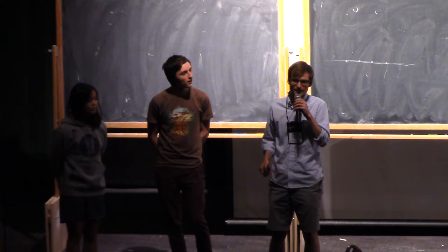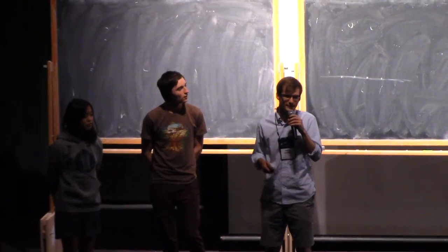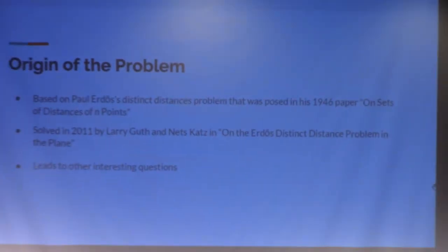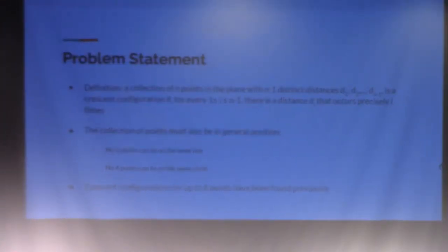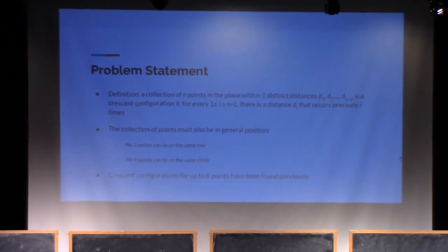Our problem is similar, but to describe it, we need to first define a Crescent configuration. A Crescent configuration is a set of n points in the plane with n minus 1 distinct distances labeled d1, d2, up to dn minus 1, such that d1 occurs once, d2 occurs twice, and so on.